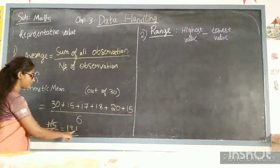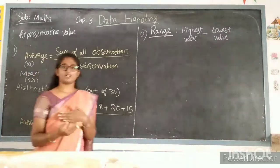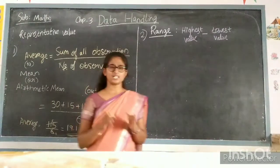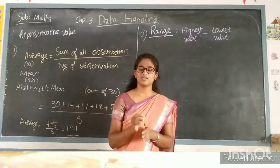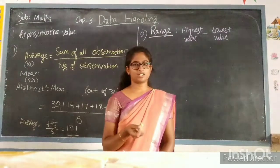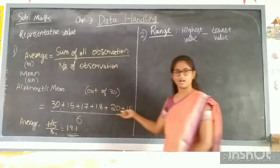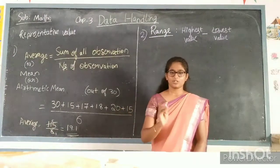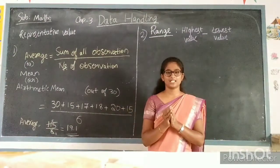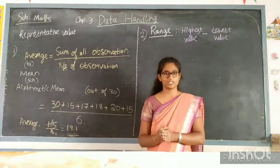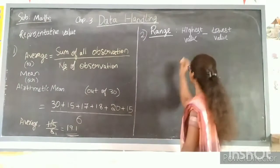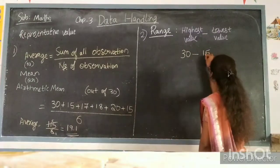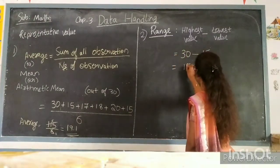So the average of the student is around 19. The next representation value of the data will be range. Range is nothing but the highest value minus the lowest value in the given observation of data. So here the highest value is 30 and the lowest value of the data is 15, so the range will be 15.